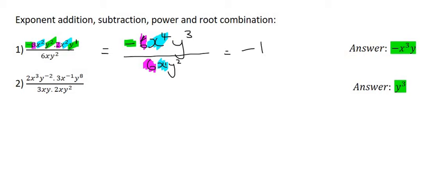Looking at this x⁴ and this x, well when the bases are the same, can you remember what to do with the exponents? Well you minus them and so that's going to be four minus one which is three. And then having a look at this y³ and this y², well we minus those exponents and so three minus two is just one.